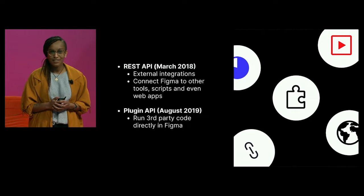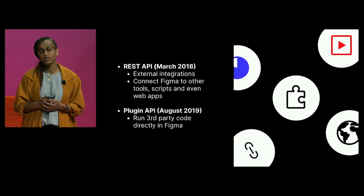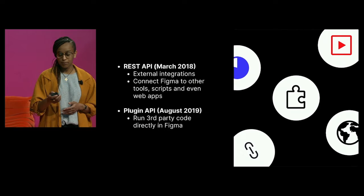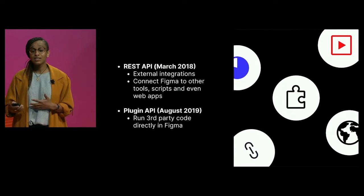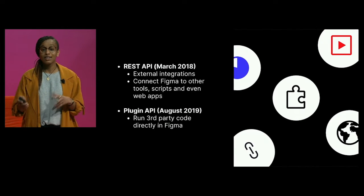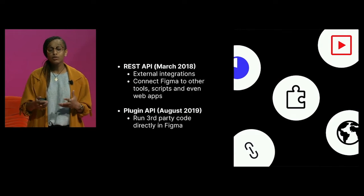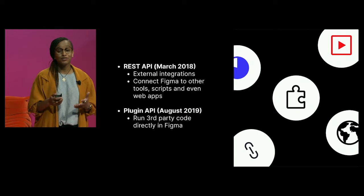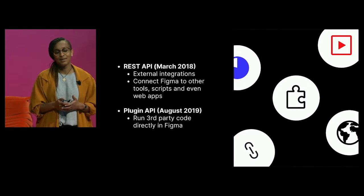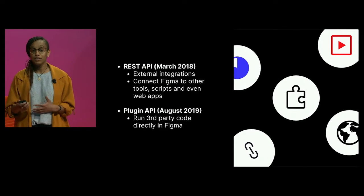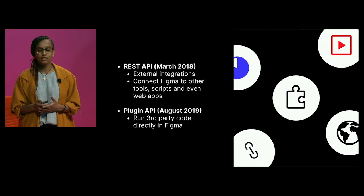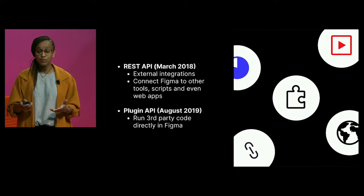After launching the REST API, we heard quickly from a lot of people that they also wanted the ability to write to Figma files and create content via an API. Looking at the use cases teams had, overwhelmingly they were for third-party applications running in the Figma editor. We knew this was a real user problem because there was actually an unofficial Figma plugin platform created to support these exact use cases. So that's when we started building the plugin API in earnest.